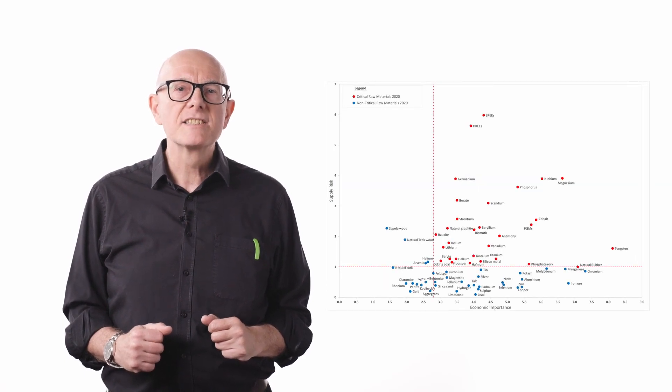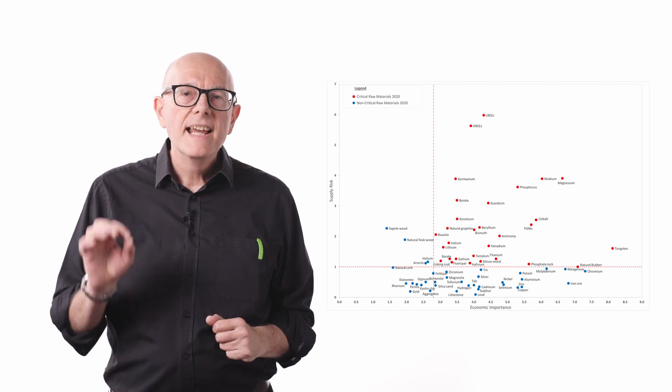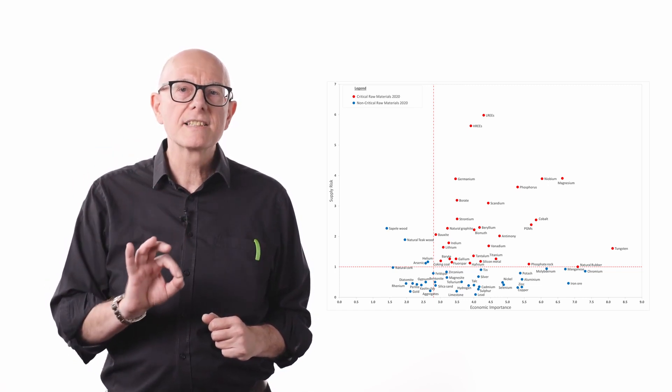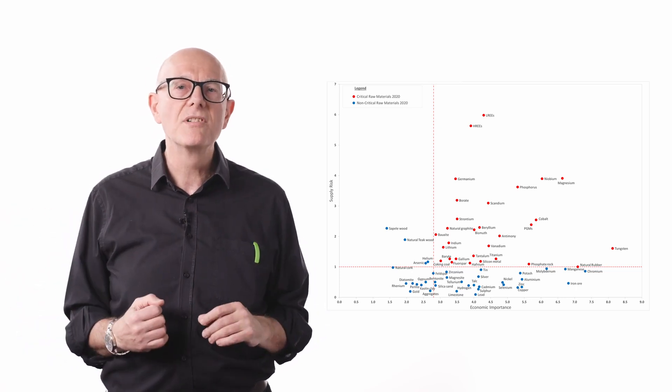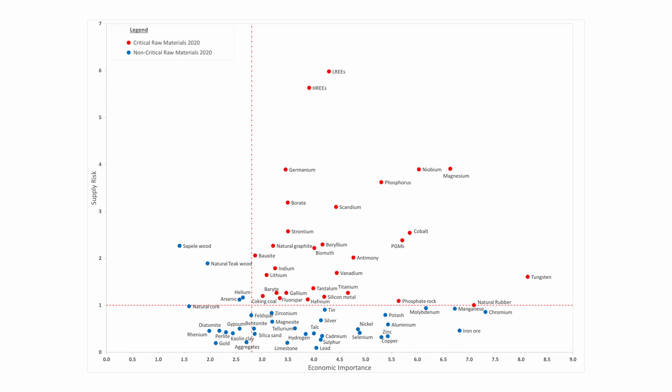Now let us look at this two-axis graph in more detail. The vertical axis shows the supply risk and the horizontal axis the economic importance. There are red dotted lines which represent the determined threshold lines — a material that crosses both lines is a critical material. All essential materials are plotted onto the graph based on those factors. The more a material is in the top right of the graph the more critical it is. Critical materials are shown in red, non-critical in blue.